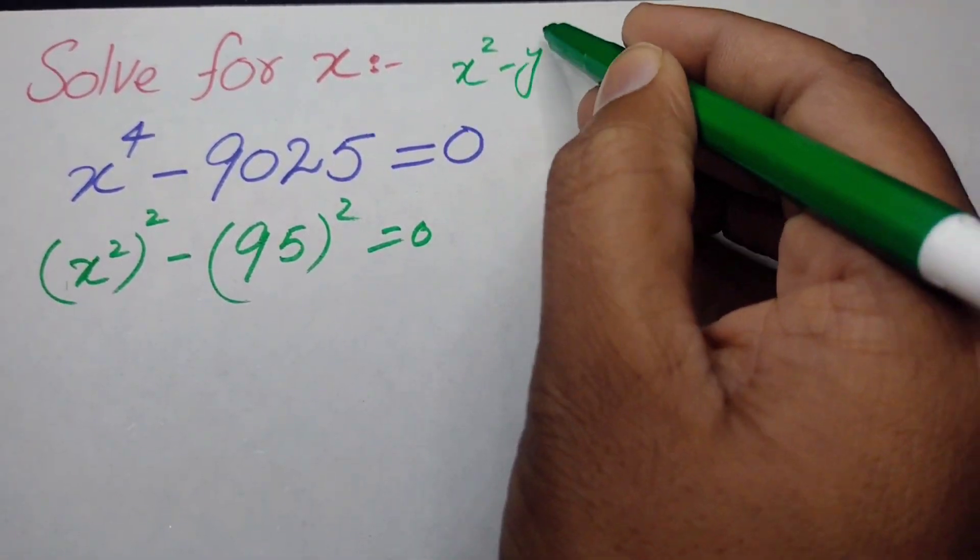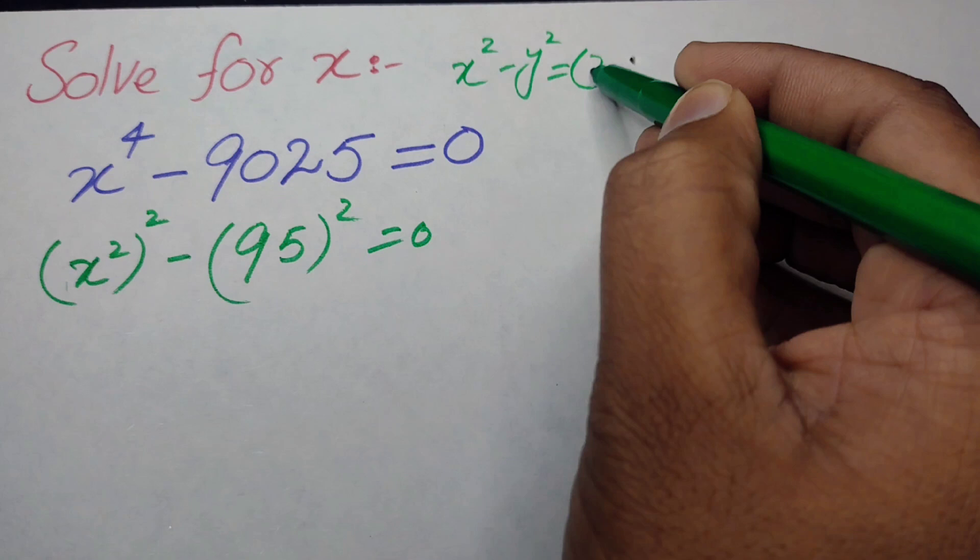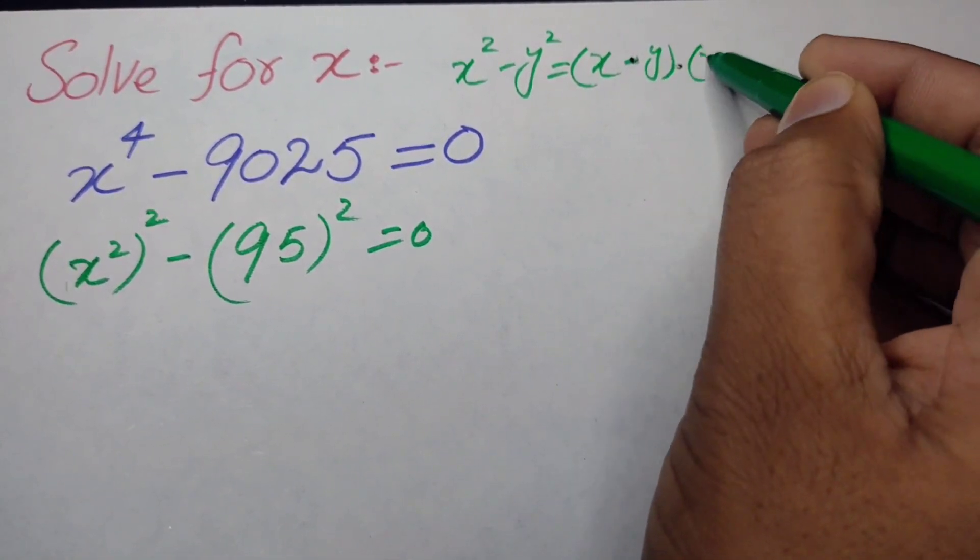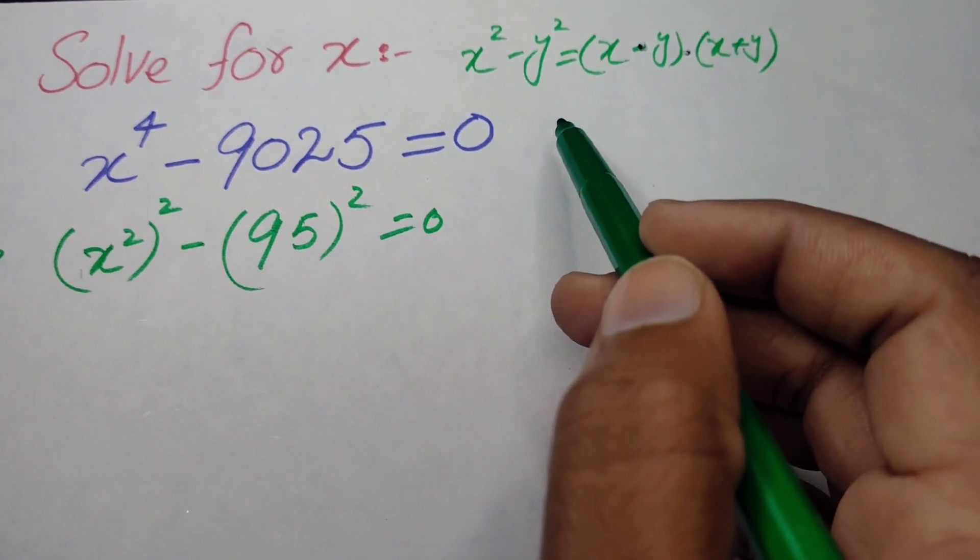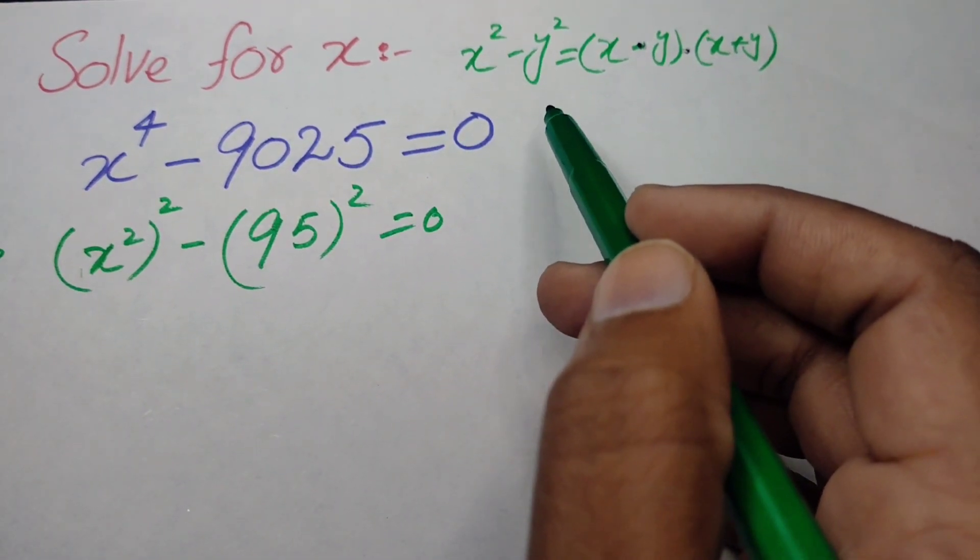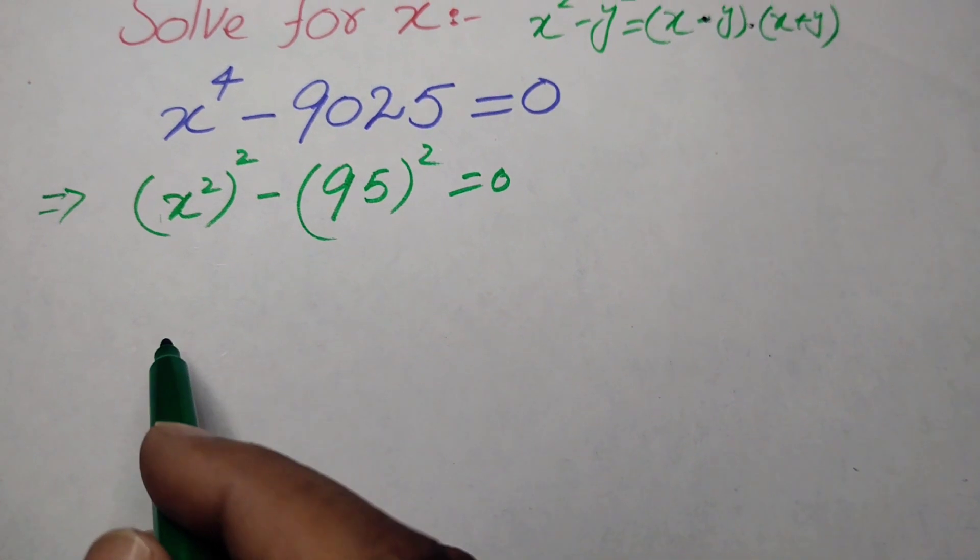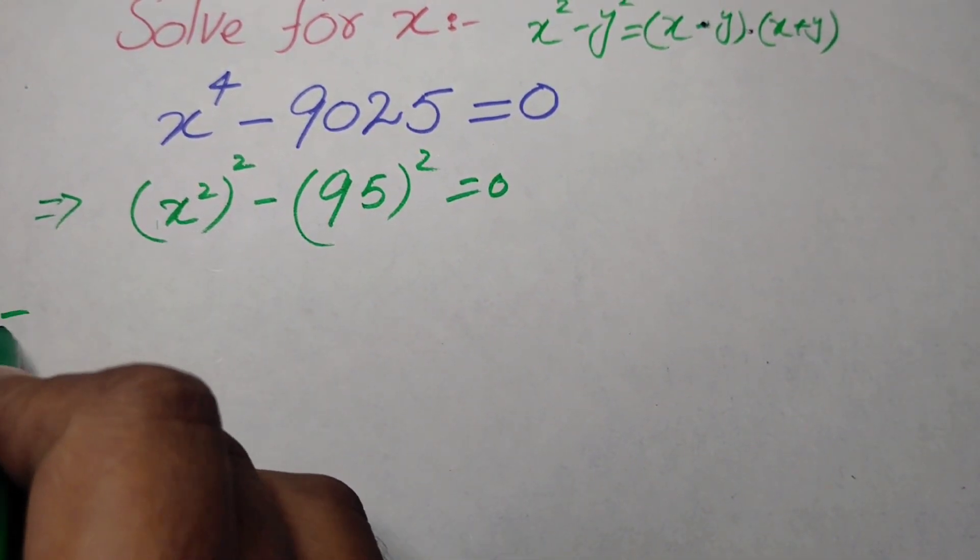We know that x squared minus y squared is equal to x minus y times x plus y. We will apply this algebraic identity here and we will write this expression as x squared minus 95 times x squared plus 95 is equal to 0.